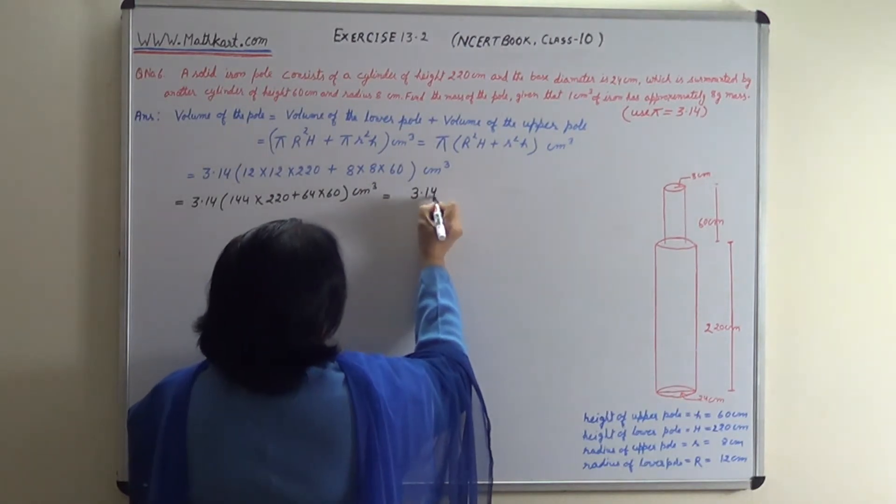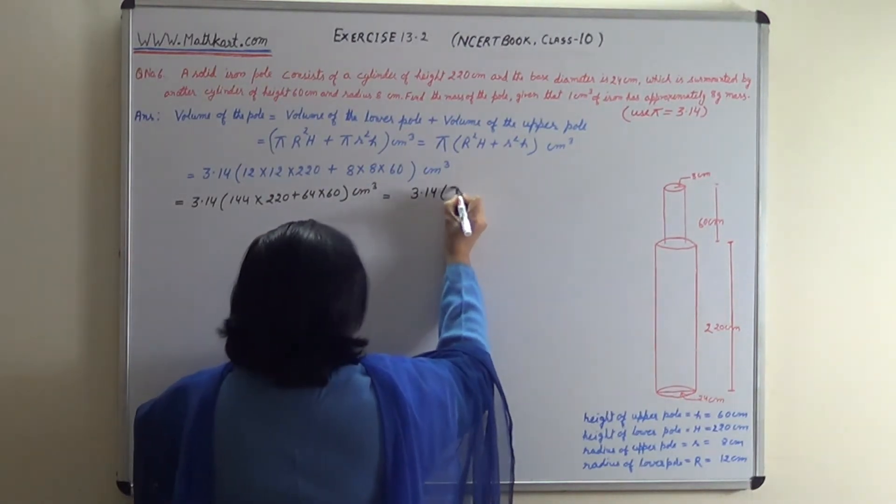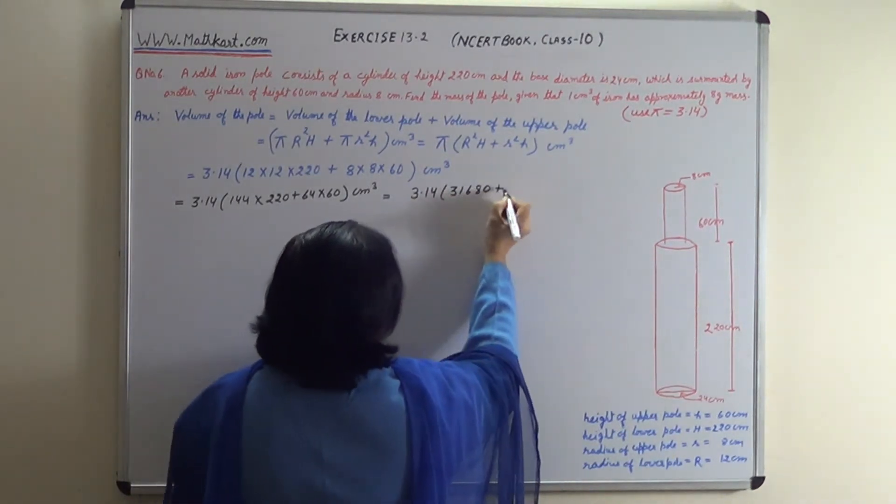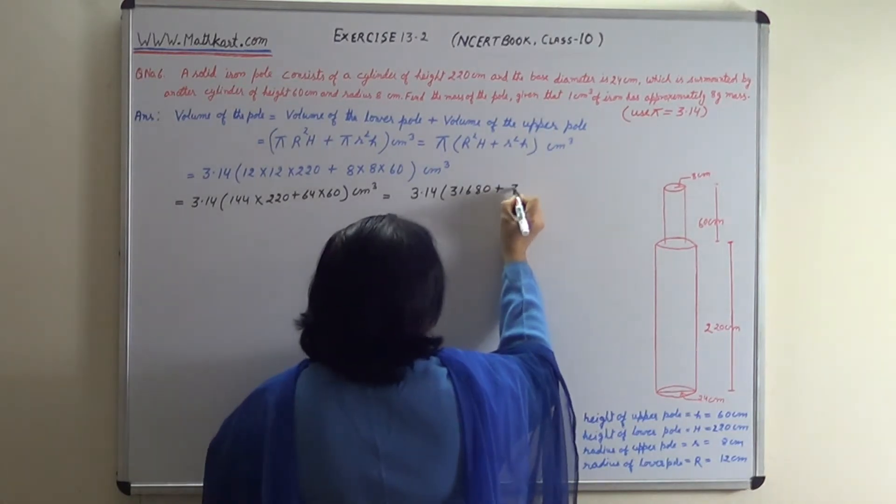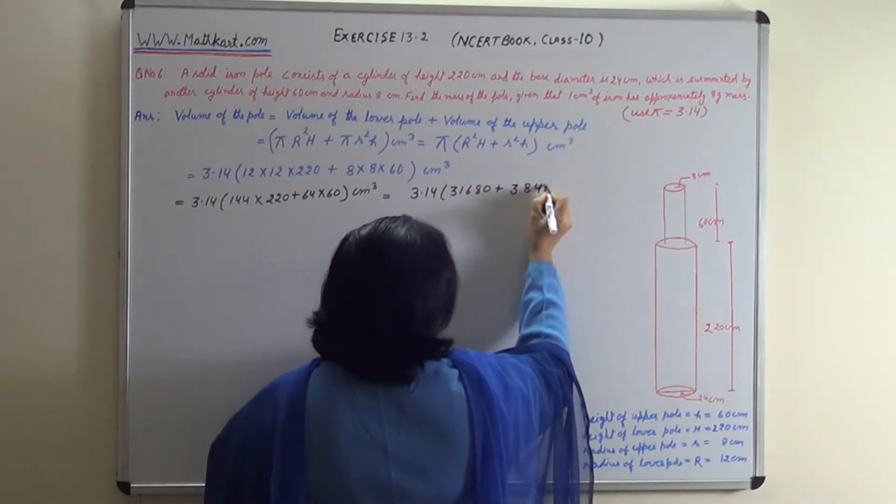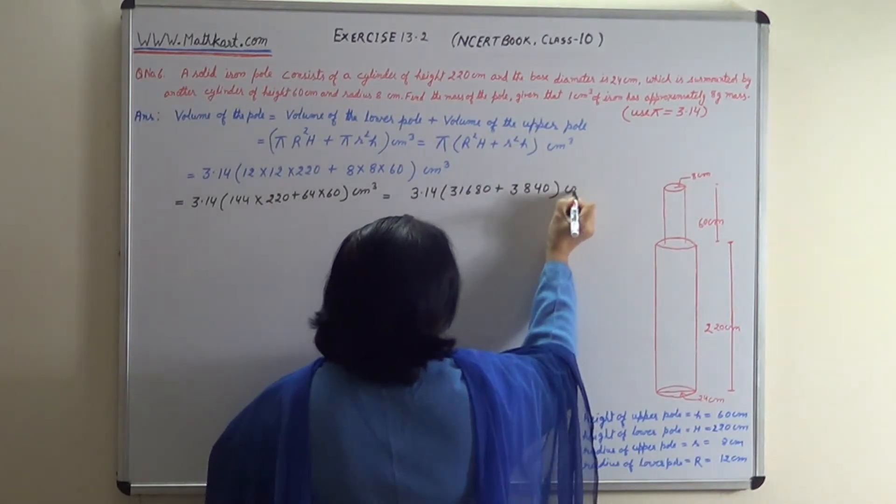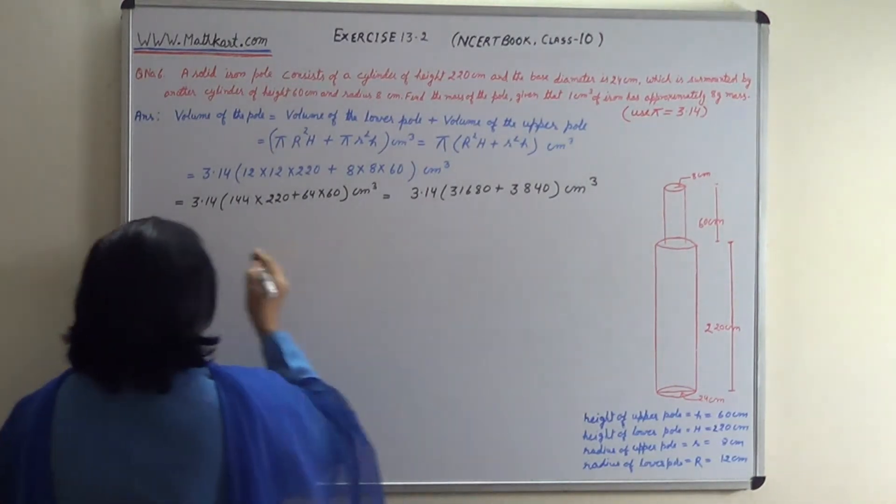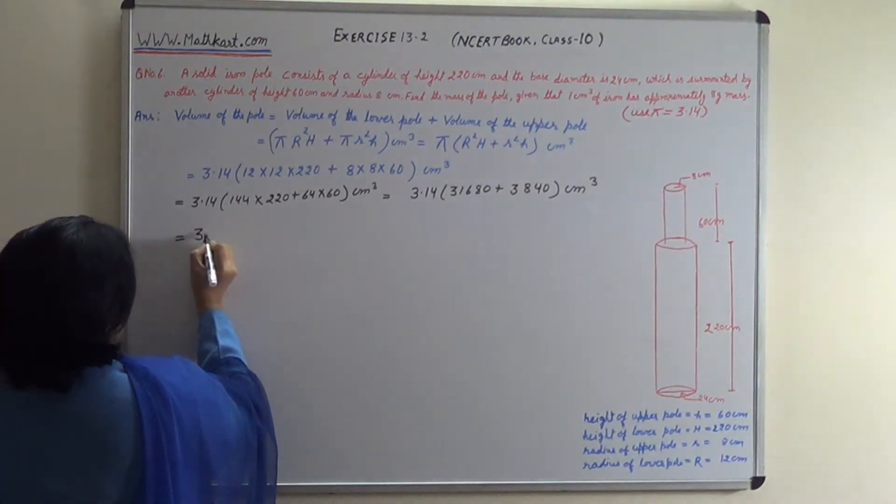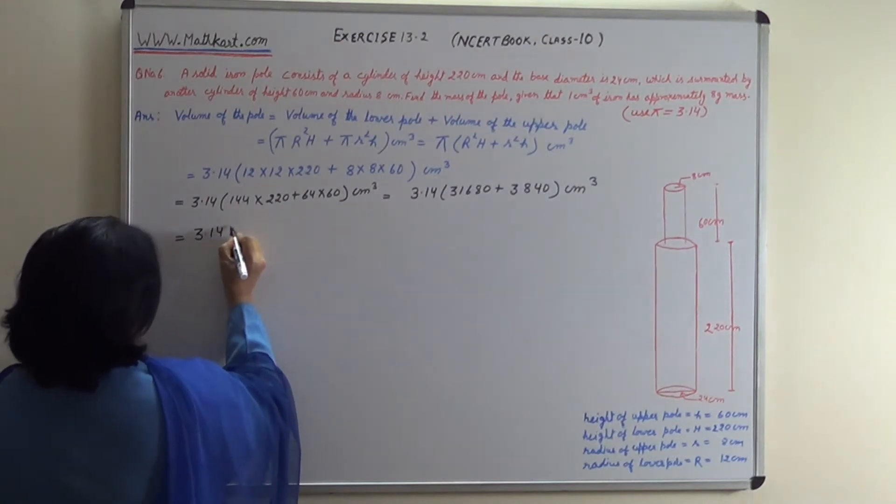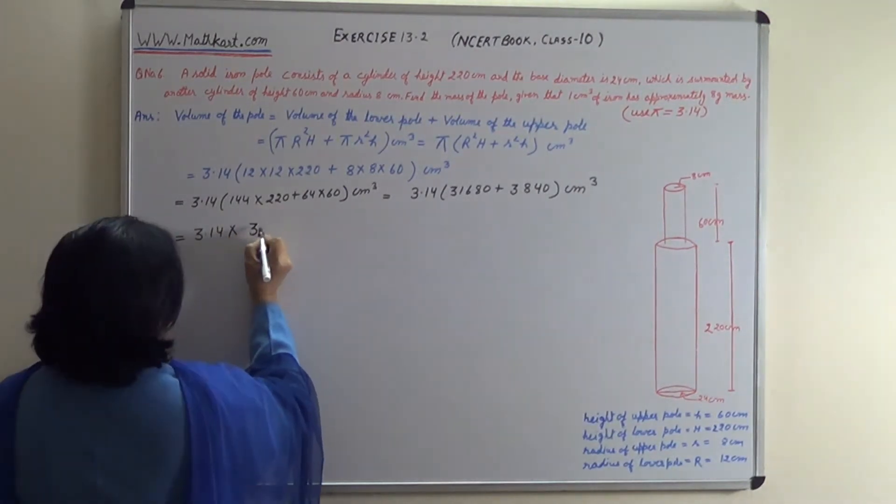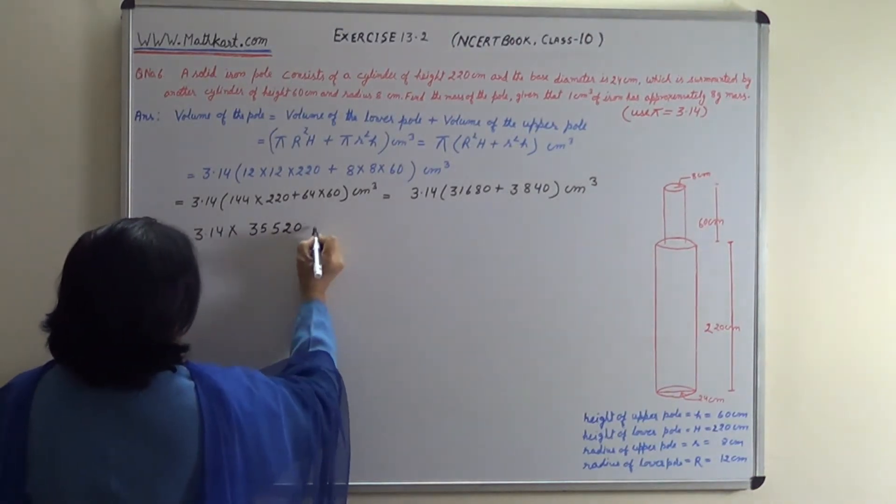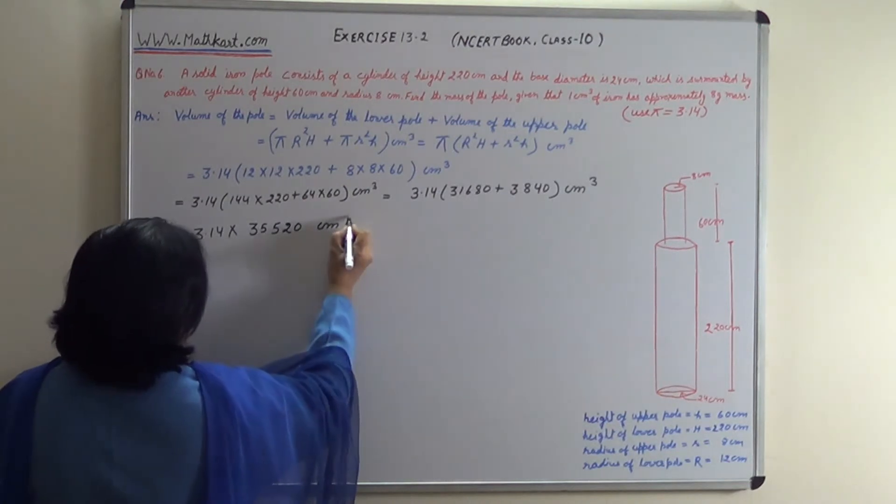3,840 cubic cm. Adding these together gives us 3.14 into 35,520 cubic cm.